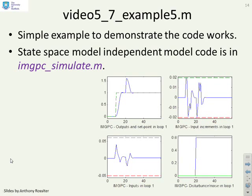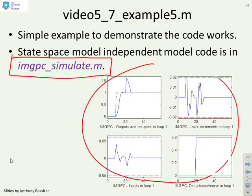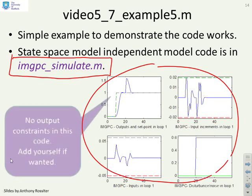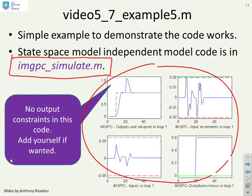So if you want to run the code and see how this works, there's the code. It's imgpc underscore simulate. And you'll notice this code doesn't have tf in it. The tf tells you it's transfer function based. This one is state space based. And here are the sorts of figures that you get out of this code. So you can run it if you want to and run your own examples. This particular code doesn't have output constraints in it. But of course, you could edit it fairly quickly if you wanted to, to include output constraints.